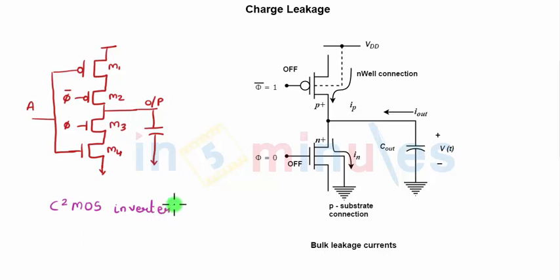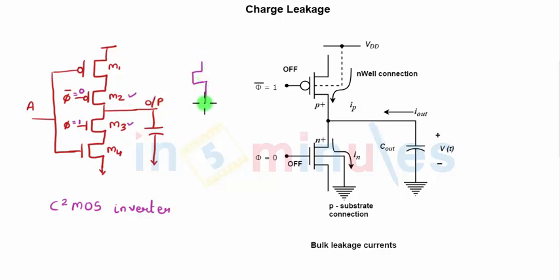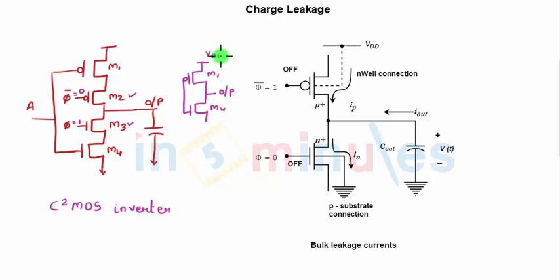We'll quickly recap: when phi is equal to 1 and phi bar is equal to 0, transistors M3 and M2 are both on — it is nothing but a closed switch. The circuit reduces to M1 with a closed switch of M2 and M3 between which the output is taken, and an M4 transistor — nothing but a simple inverter which we have already studied. These clock signals help in data synchronization.